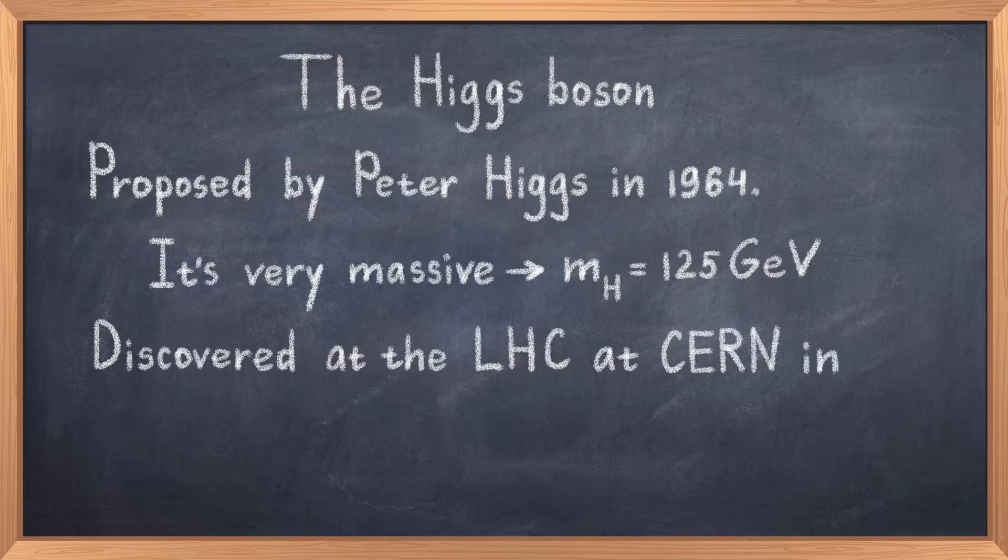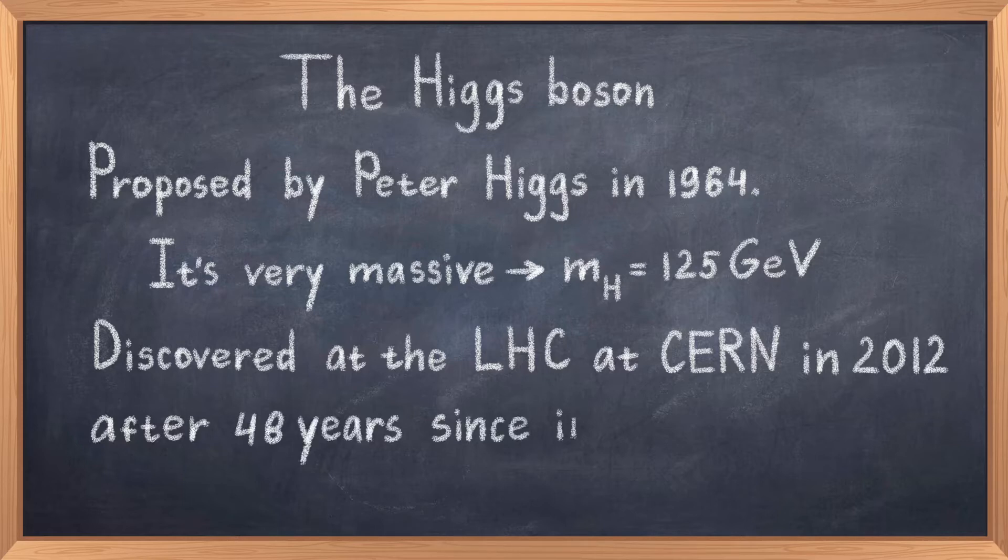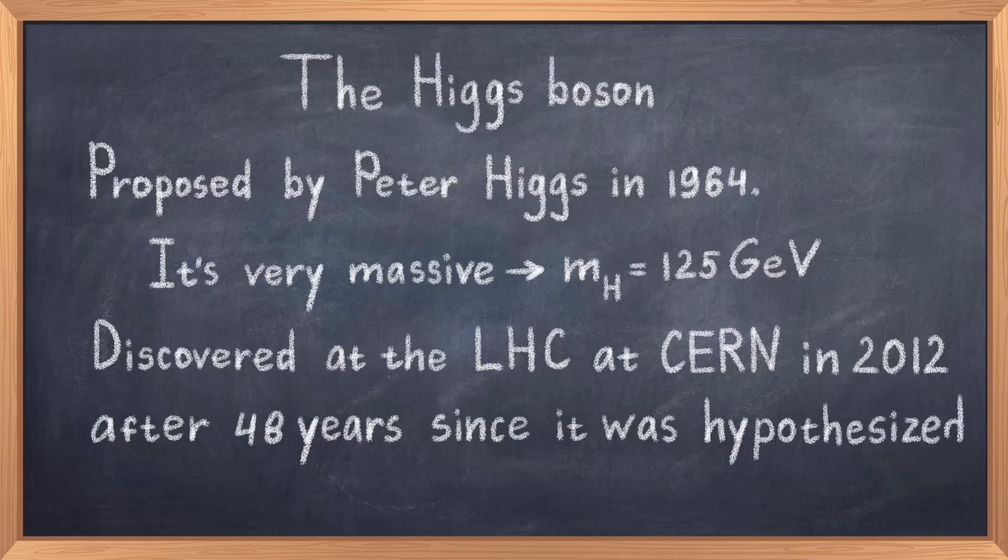But there can also be other reasons why particles can be hard to discover. Making experiments with higher energies require bigger machines, and so far only one such machine, namely the Large Hadron Collider at CERN in Geneva is able to produce it. It is also the place where the discovery was announced in 2012 after 48 years since the Higgs boson was first hypothesized.